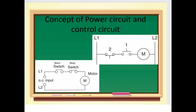A control circuit is a circuit which carries the signals directing the performance of the controller. This circuit contains pilot devices such as push buttons, selector and limit switches, timers, pilot lights, and magnetic coils of relays, starters, and contactors. These pilot devices appear on the ladder logic diagram, so it is important to understand them.